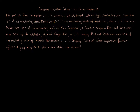Corporate consolidated returns, tax basics, problem two. The stock of Root Corporation, a U.S. company, is publicly traded with no single shareholder owning more than five percent of its outstanding stock. Root owns 95% of the outstanding stock of Potato Inc., also a U.S. company. Potato owns 100% of the outstanding stock of Yam Corporation, a Canadian company. Root and Yam each owns 50% of the outstanding stock of Ginger Inc., a U.S. company. Root and Potato each owns 50% of the outstanding stock of Turmeric Corporation, a U.S. company. Which of these corporations form an affiliated group eligible to file a consolidated tax return?